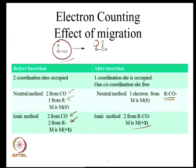This is fairly important to remember: during an insertion reaction, whether you use the neutral method (M remains M⁰) or the ionic method (M⁺), you are not changing the oxidation state of the metal. However, the electron count on the metal undergoes a 2-electron loss. So if you started with an 18-electron complex, you will end up with a 16-electron complex, and one coordination site is vacant at the end of the reaction.